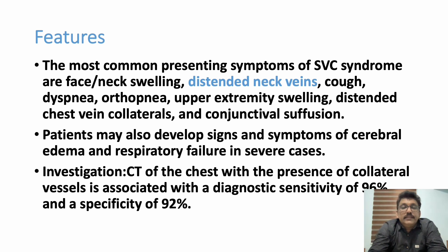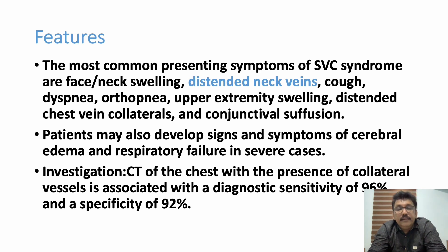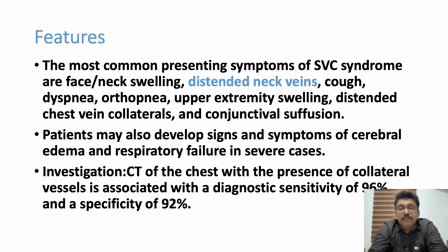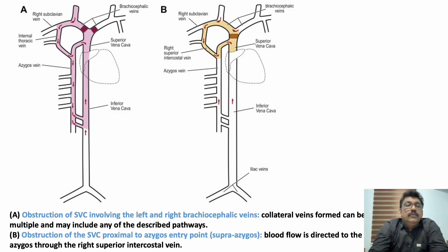The most important investigations in SVC syndrome are chest X-ray or CT scan. Chest X-ray gives a 2D picture of the mediastinum, and mediastinal widening can be seen. CT scan, however, can exactly tell where the obstruction is and what type it is. Depending on the site of obstruction, there are multiple classification patterns.